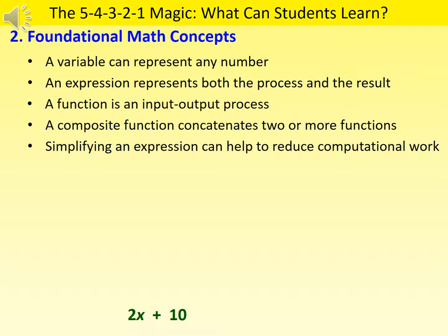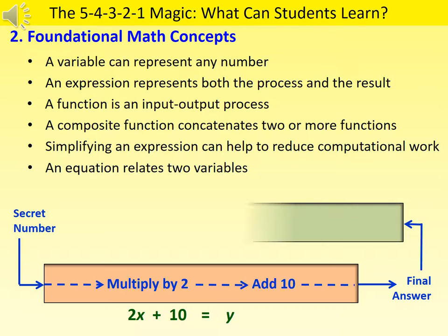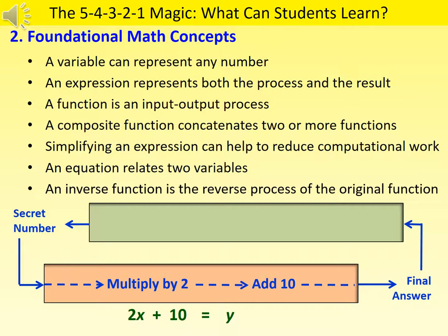We can take this opportunity to point out that an equation shows how two variables are related. Here, the final answer y is related to the secret number x by multiplying x by 2 and then adding 10. We can also say that the final answer y is a function of the secret number x. The function rule is simply times 2 and add 10. To find the secret number from the final answer requires us to work backwards, and this idea leads naturally to the concept of inverse function.